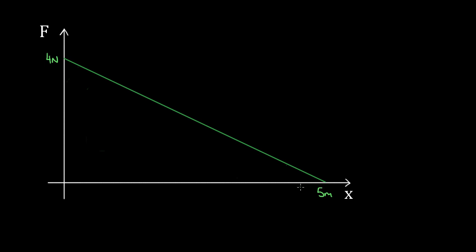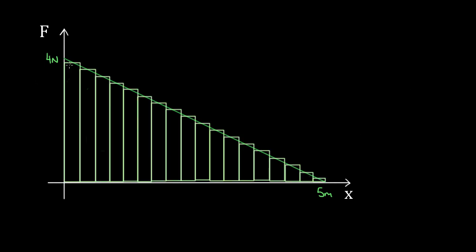Physicists and mathematicians are clever. They said: the only thing we know is that for a constant force, the area underneath equals the work. So instead of considering a continuously diminishing force, let's say I pushed with a whole bunch of constant forces each for a small displacement. I started with four Newtons but pushed for only about 10 centimeters. Then I dropped to maybe 3.9 Newtons and pushed for another 10 centimeters. I keep doing this, reducing my force but keeping it constant for each small step, then dropping it again.